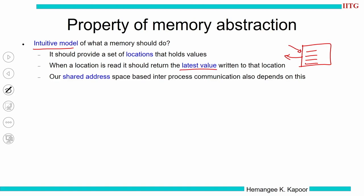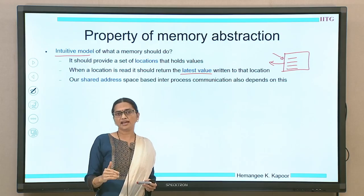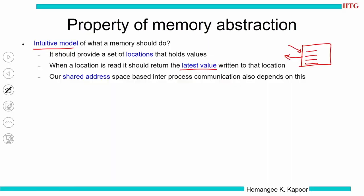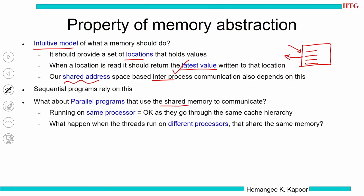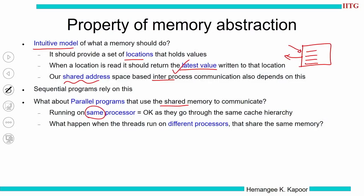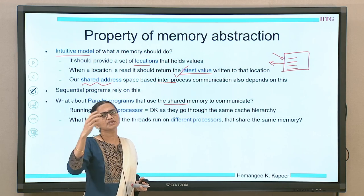If somebody else changes x and we read it after that, we should get the latest value of x. The intuitive model says a set of locations helps us get the latest value of any given location. At the same time it provides a shared address space for inter-process communication. In parallel programs using shared memory, if those programs run on the same processor they go through the same cache hierarchy, and there is a single path so there is not much problem.